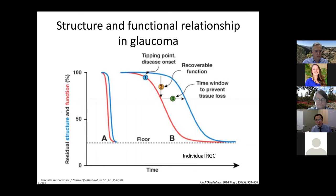We know this from trauma patients who have, say, blunt trauma to the eye where pressure went up to 50. They may have some loss of vision, but if we lower the pressure dramatically, we can sometimes get vision back. So the structure and function of RGCs definitely have a correlation, but the temporal relationship is affected by many factors — primarily intraocular pressure.